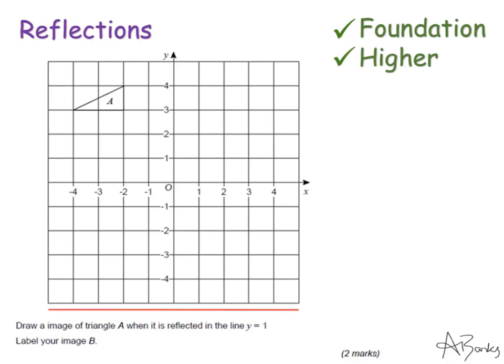The line Y equals 1 are all the coordinates that have a Y coordinate of 1. So for example we have 0,1, you could have 3,1 or you could have minus 2,1.